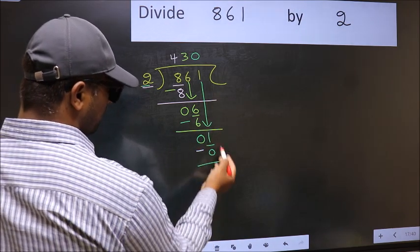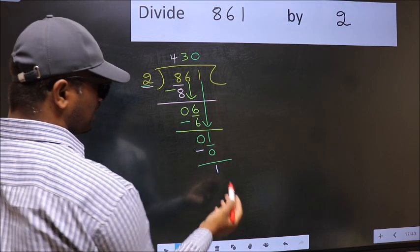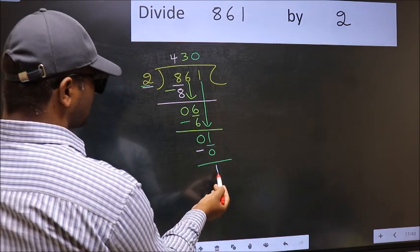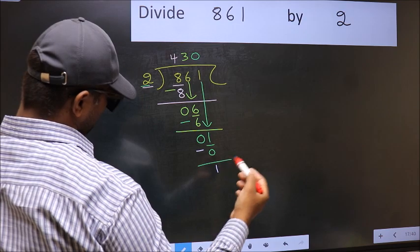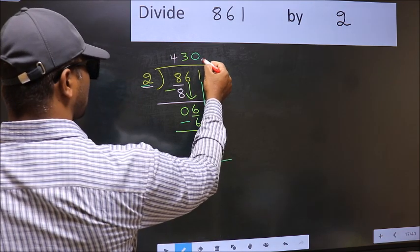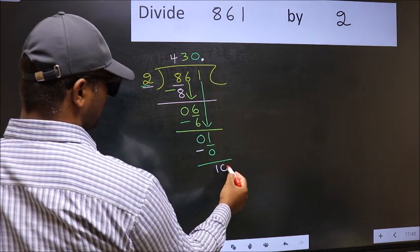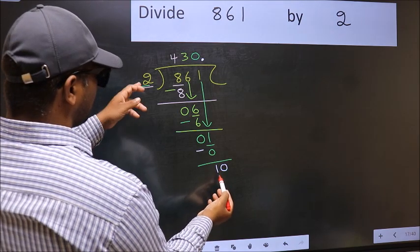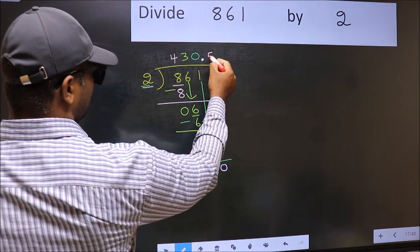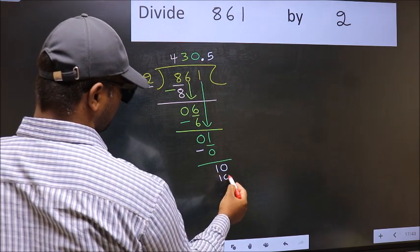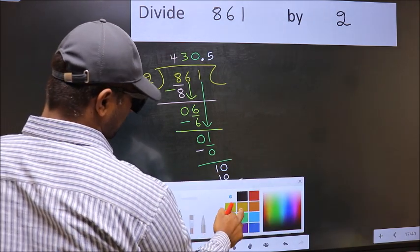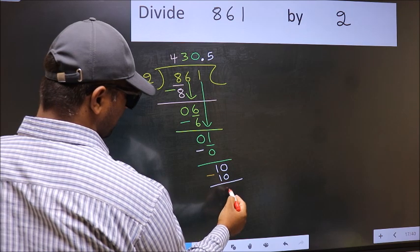Over here, we did not bring any number down. And also, 1 is smaller than 2. So now you can put a dot and take 0. So 10. When do we get 10 in 2 table? 2, 5, 10. Now you subtract. 10 minus 10, 0.